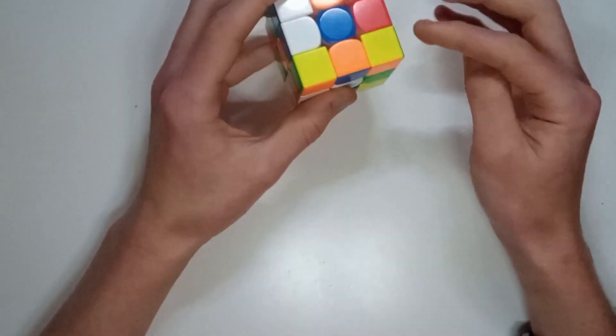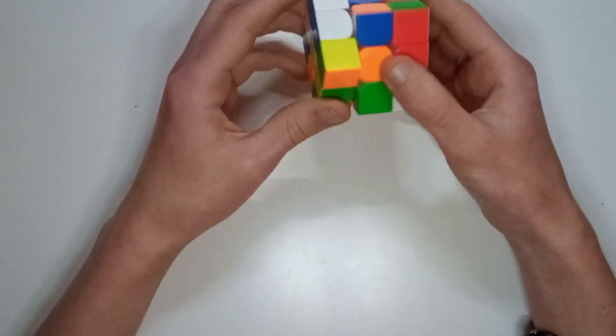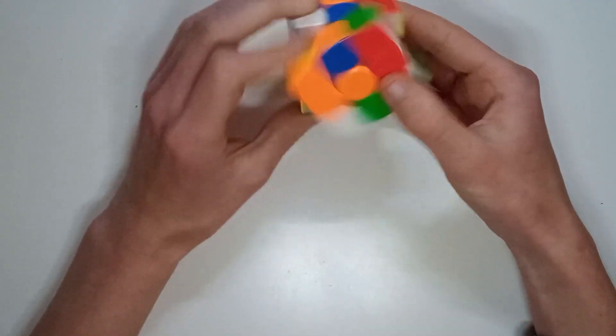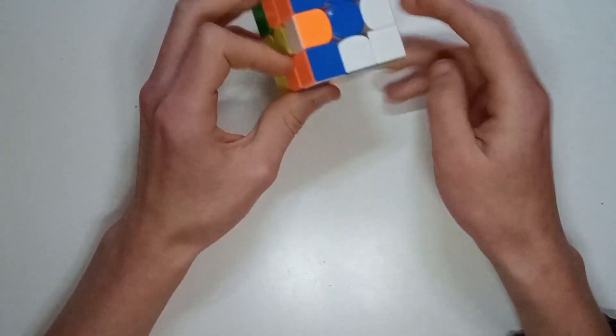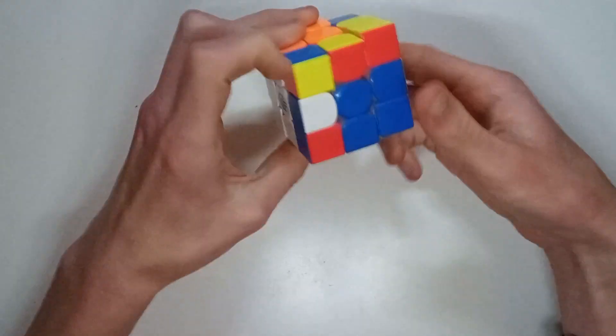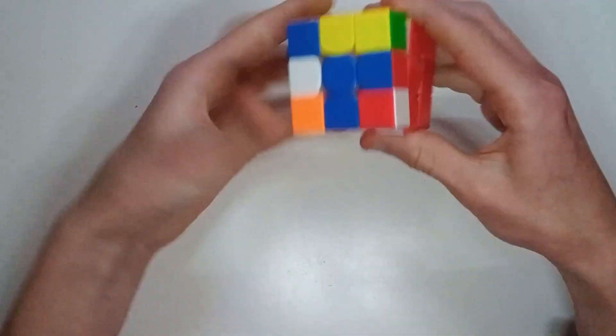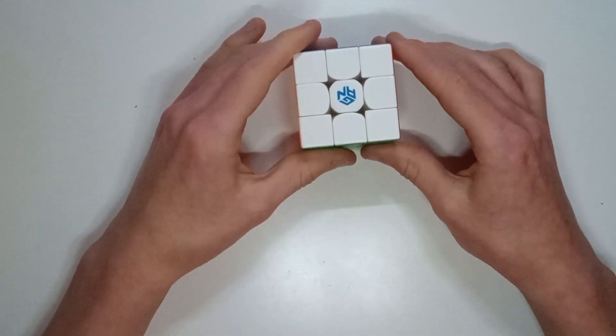But I think I would have gone with a green cross and I would have done that so that I can then get the cross done and get this first F2L pair ready to do and then go on and finish this off like that, and then I do get pretty easy last layer doing that.